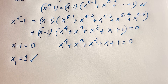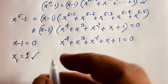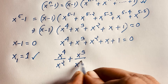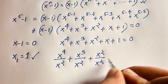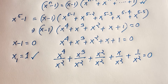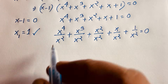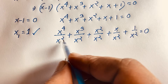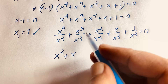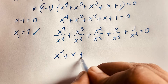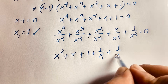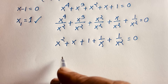Now I divide both sides by x squared. So we get x to the power 4 over x squared, plus x cubed over x squared, plus x squared over x squared, plus x over x squared, plus 1 over x squared, all equal to 0. Using exponent laws, this simplifies to x squared plus x plus 1 plus 1 over x plus 1 over x squared equals 0.